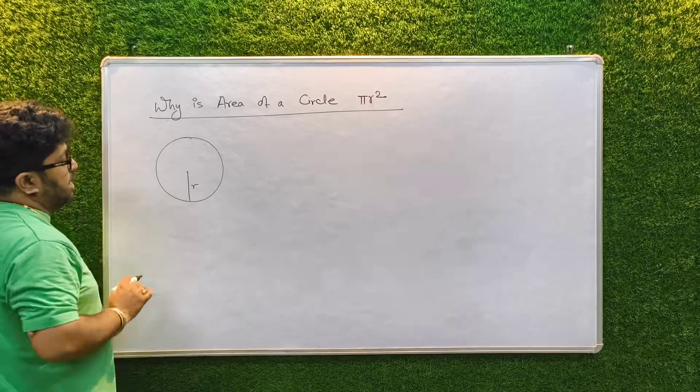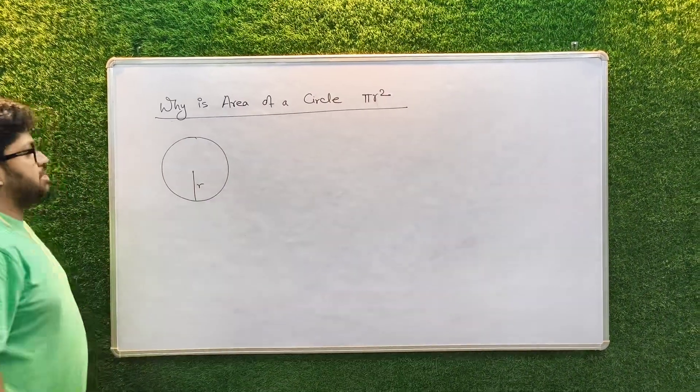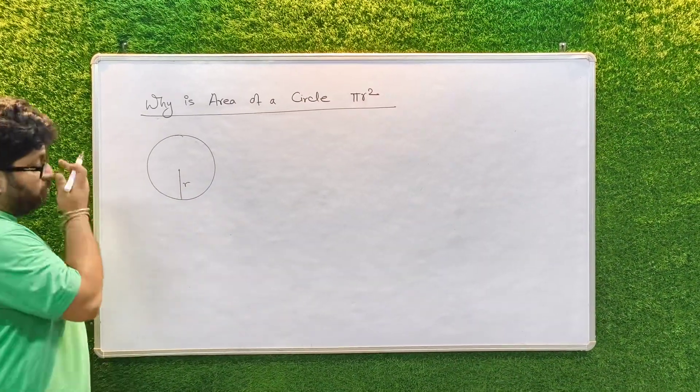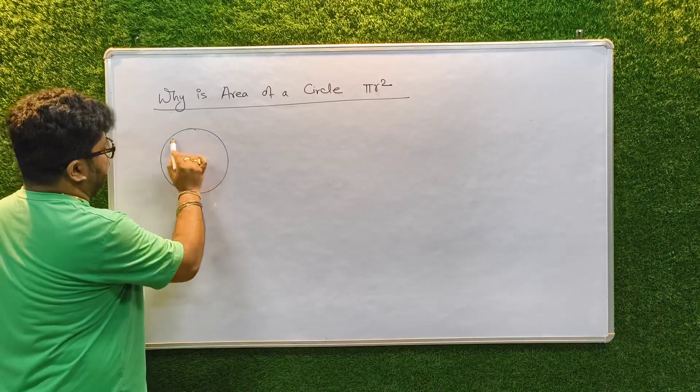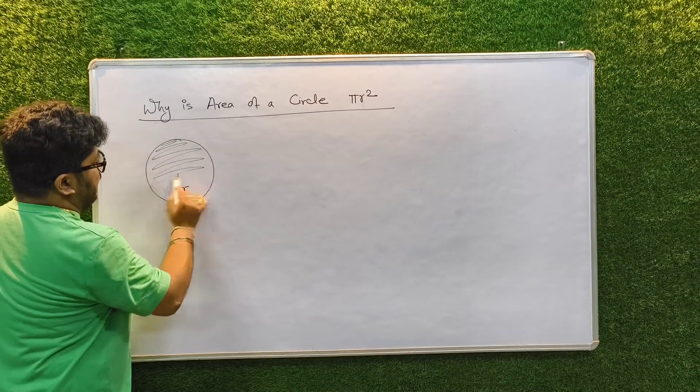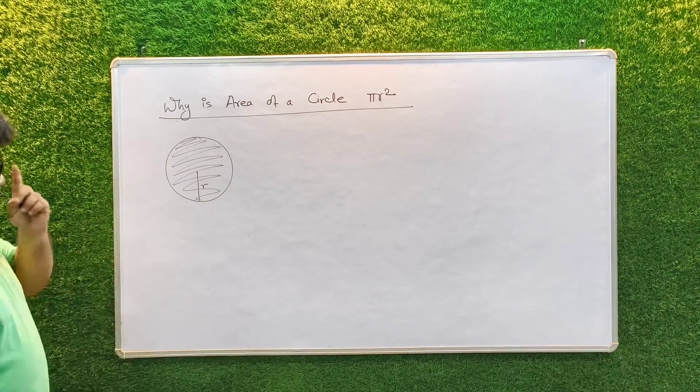Let this be a circle and let the radius of this circle be r. Now let us try to find out how the area of this circle, the entire area of this circle, is pi r square.